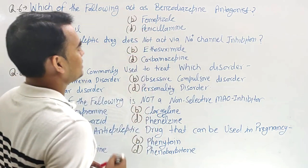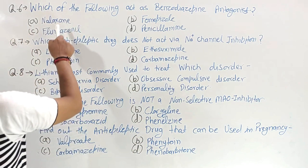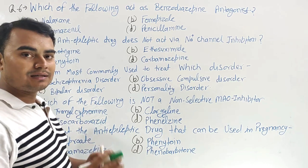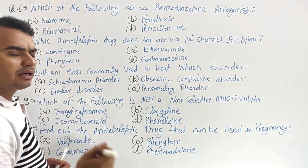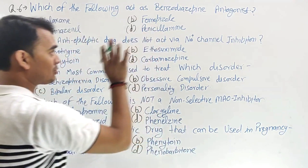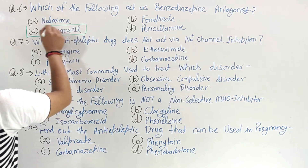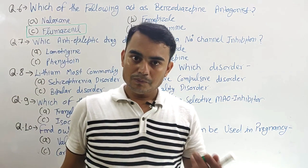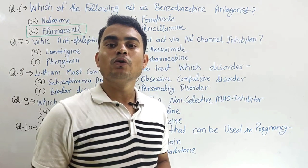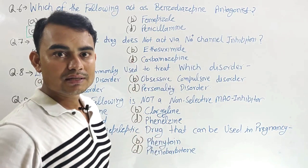Next: which of the following acts as a benzodiazepine antagonist? Options are naloxone, fomepizole, flumazenil, and penicillamine. Naloxone is an opioid antagonist — not correct. Fomepizole is the methyl alcohol poisoning antidote — not a benzodiazepine antagonist. Flumazenil — yes, this is the benzodiazepine antagonist, so flumazenil is our right answer. Penicillamine is a chelating agent used for copper poisoning. Benzodiazepines are preferred over phenobarbitone because they have a selective antagonist — flumazenil.